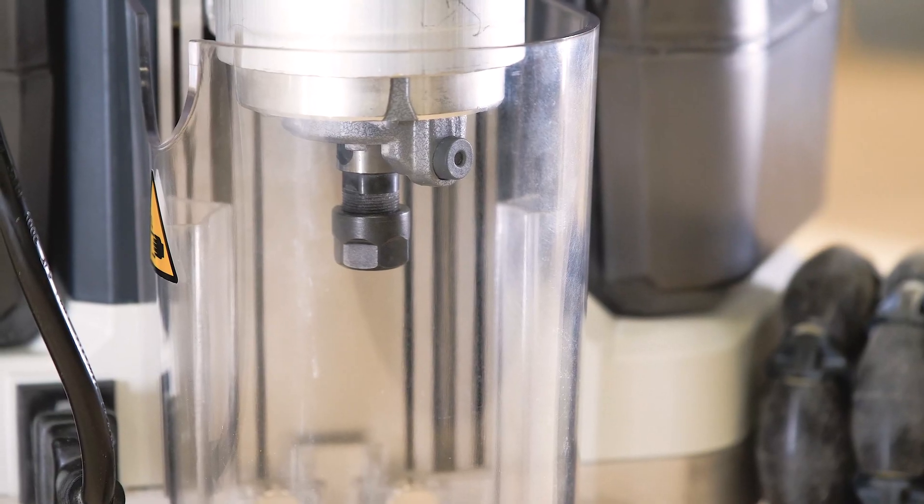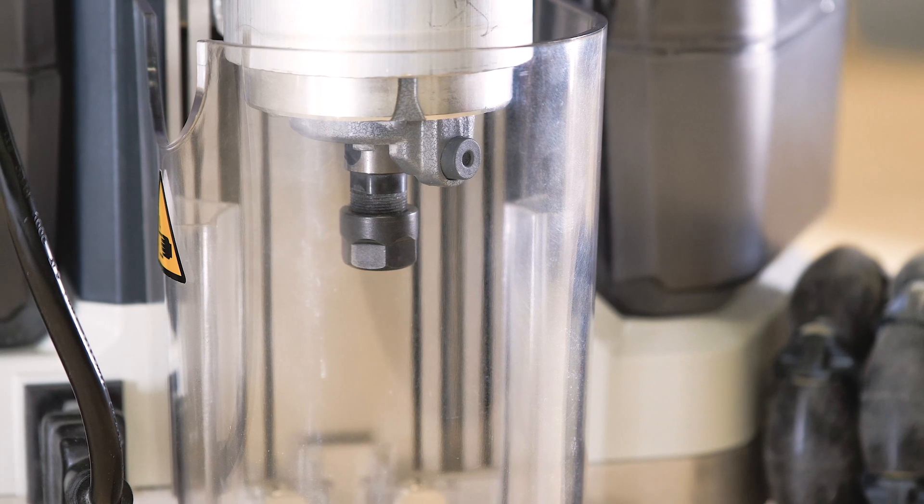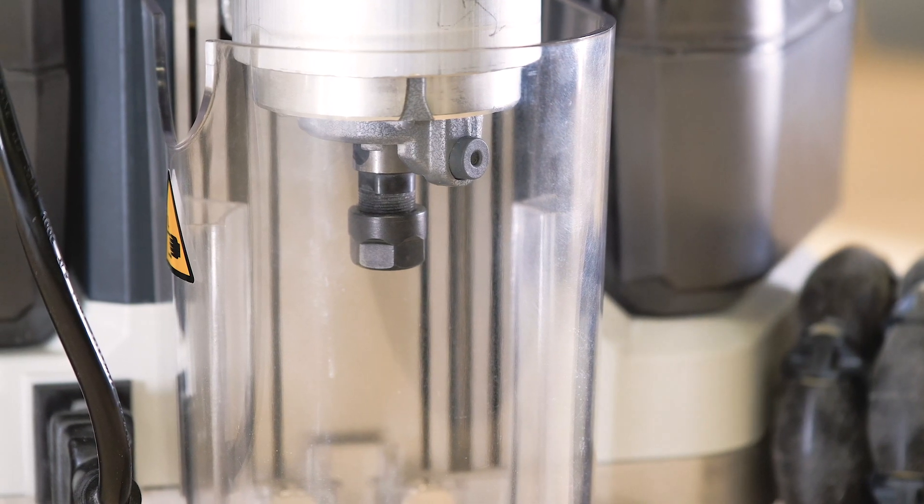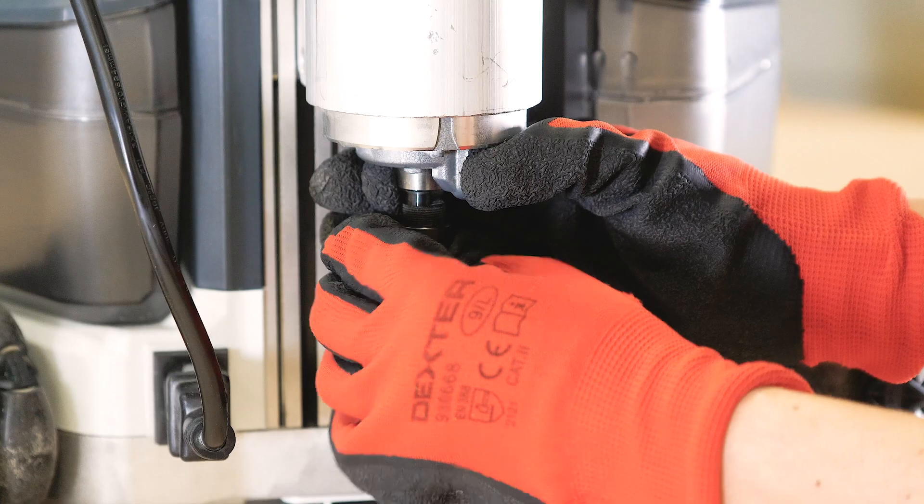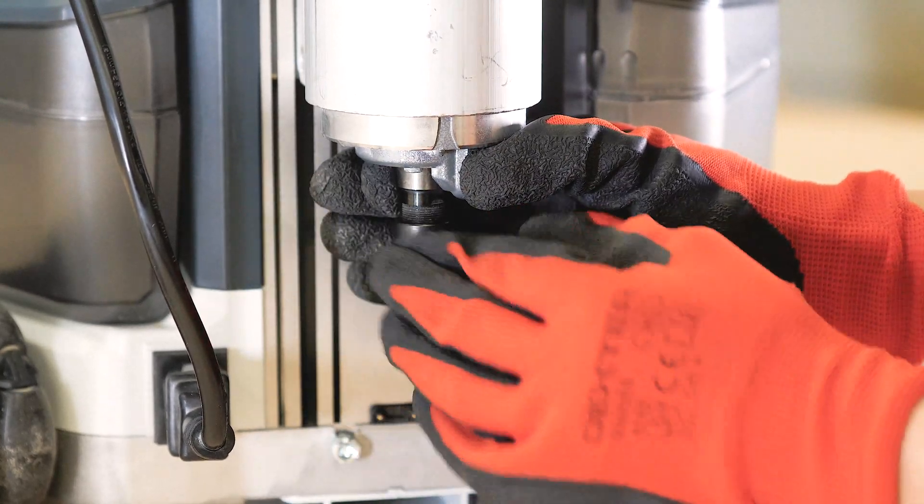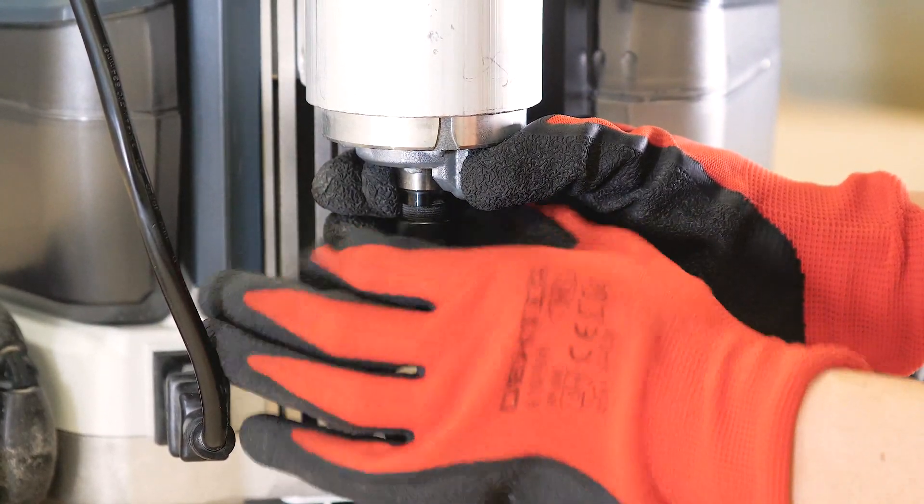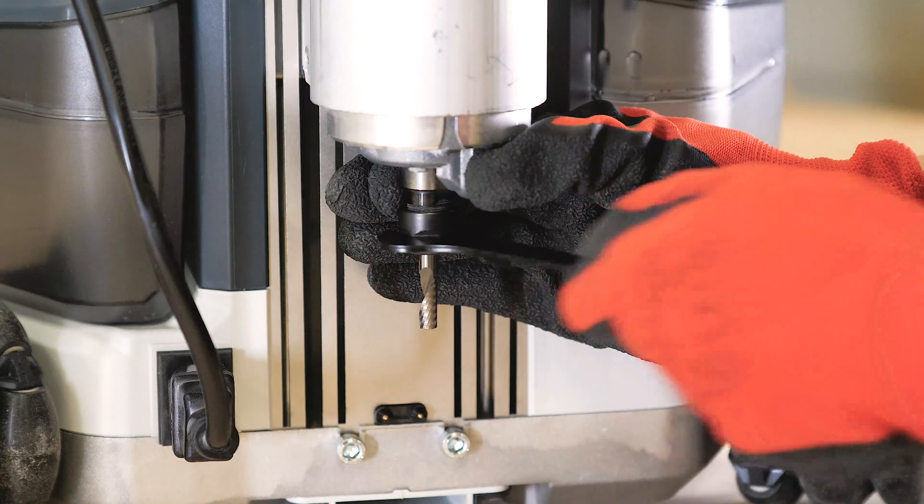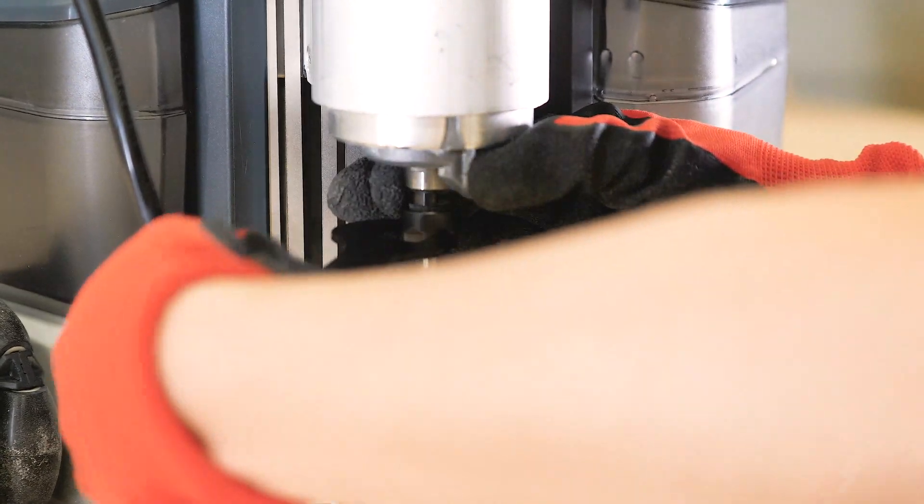We suggest you always check the diameter of the bit before installing it in order to match it with the right collet. Hold tight the nut with the collet in its original position by pressing the spindle rotation lock button and tighten it with the wrench.